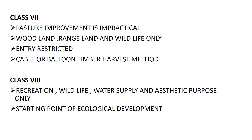In Class 7 land, pasture improvement is just impractical. You can't grow pasture for soil improvement. You can only go for woodland, rangeland, and wildlife. Entry is totally restricted — no public is allowed, and only some specially permitted persons will be allowed. There is no special timber harvest method here; only cable or balloon timber harvest methods are used.